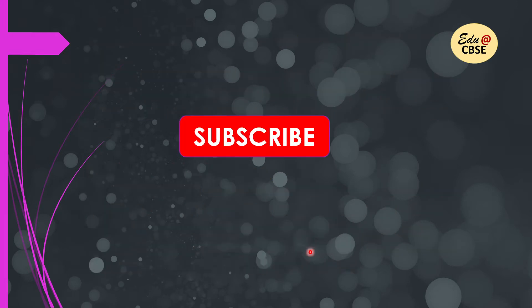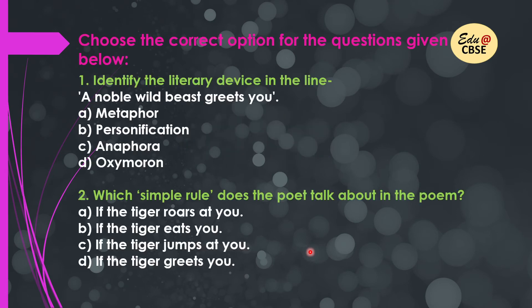Those are the 10 important questions. Now we move on to the MCQ test, but before that please subscribe to the channel and give it a thumbs up. There are 25 MCQ questions — take a sheet, write down numbers 1 to 25, write the correct option against each number, then match your answers and check your performance at the end. The first question: identify the literary device in the line 'a noble wild beast greets you.'